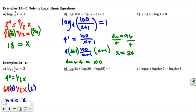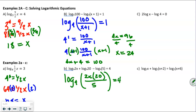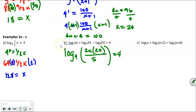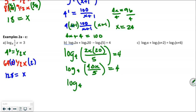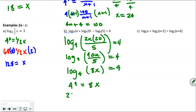For the 'you try': combine log base 4 of 2x plus log base 4 of 20 minus log base 4 of 5. This gives log base 4 of (2x times 20 divided by 5) equals 4, which simplifies to log base 4 of 8x equals 4. Converting: 4 to the 4th equals 8x, and 4 to the 4th is 256. Dividing both sides by 8 gives x equals 32.